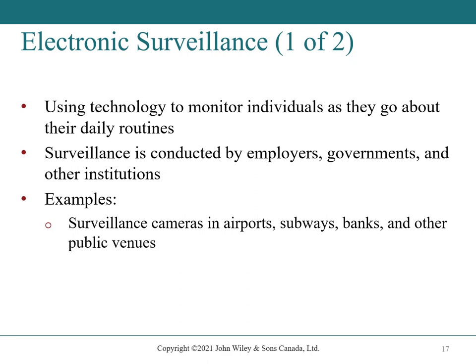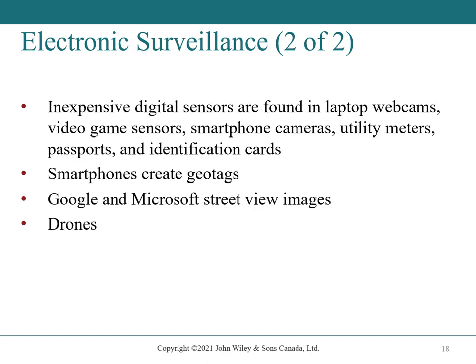Electronic surveillance is using technology to monitor individuals as they go about their daily routines. Surveillance is conducted by employers, governments, and other institutions — for example, surveillance cameras in airports, subways, banks, and other public venues. Inexpensive digital sensors are found in laptop webcams, video game sensors, smartphone cameras, utility meters, passports, and identification cards. Smartphones create geo-tags; a picture taken on a smartphone may record the location associated with it. Google and Microsoft Street View images are surveillance-type pictures of streets and neighborhoods. And then there are drones.